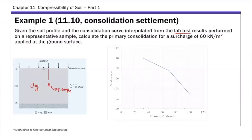The sample is taken at the middle of the clay layer, so that's 4 meters depth. We perform the 1D consolidation test and get this E log sigma prime curve. We also have the initial void ratio and the saturated unit weight of this clay layer. We're going to calculate the primary consolidation for a surcharge of 60 kilonewton per meter square — that's our change in effective stress applied on top.